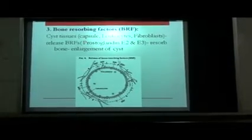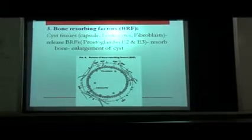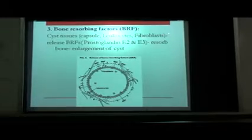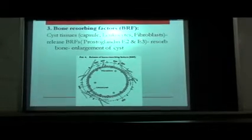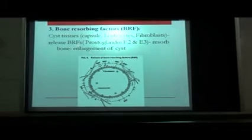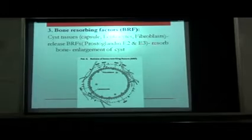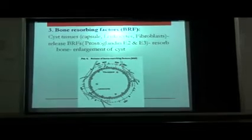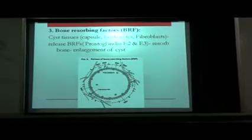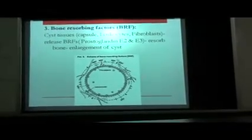Coming on to bone-resorbing factors: the capsule of the cystic lining may have blood vessels, along with the presence of certain inflammatory cells such as macrophages. They will release certain bone-resorbing factors — that is prostaglandin E2 and E3 — which will cause resorption of the surrounding bone, and that is how the cystic wall, which was already proliferating, will expand through the bony cavity.